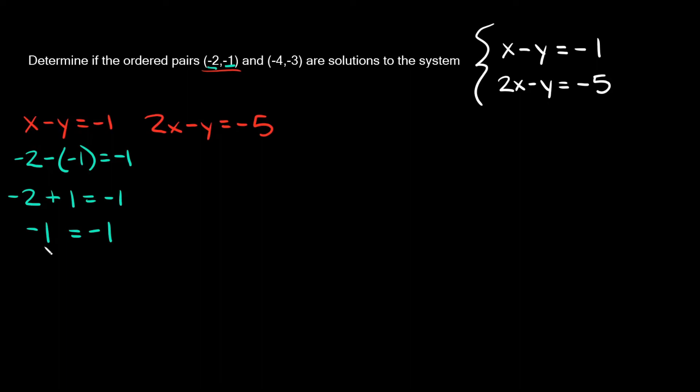So here we have negative 2 minus a negative number, which is the same thing as adding, so plus 1 is equal to negative 1. Then negative 2 plus 1 is equal to negative 1, and we're setting that equal to this negative 1. We got negative 1 is equal to negative 1, so this ordered pair negative 2, negative 1 is a solution to this equation.